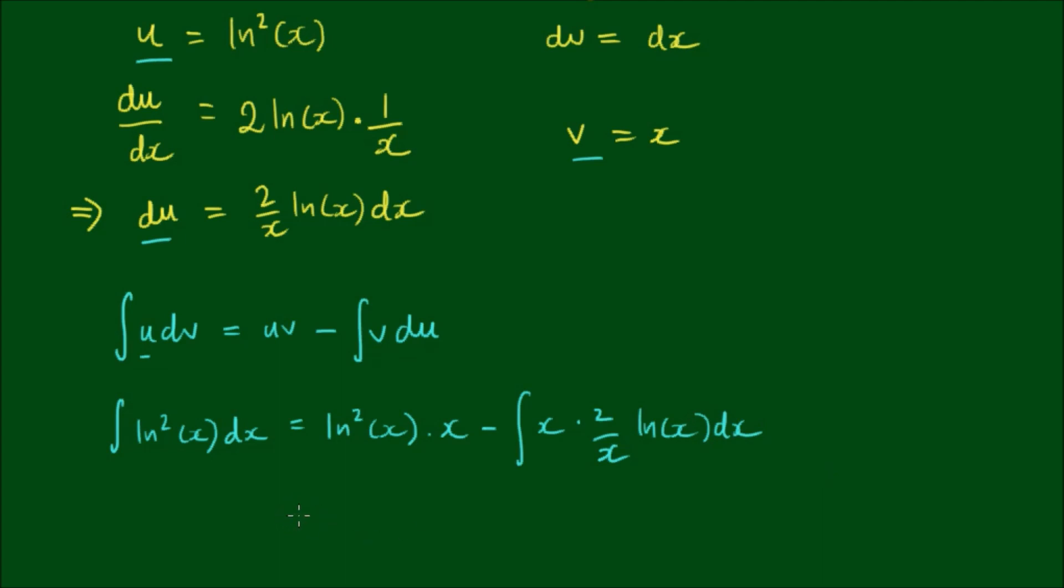So let's simplify that a little bit. So we have x log squared of x, minus, these x's cancel, 2 can come out of the front, by the integral of log of x dx.